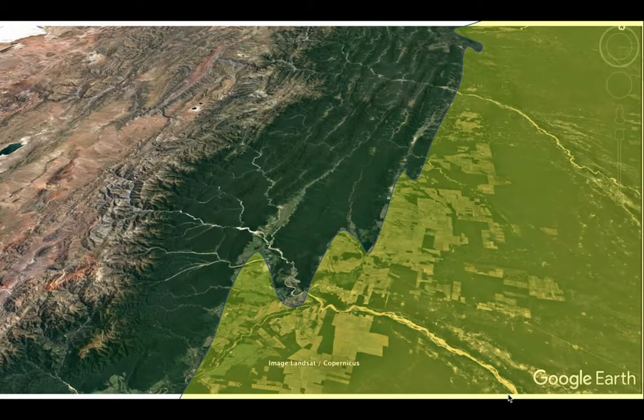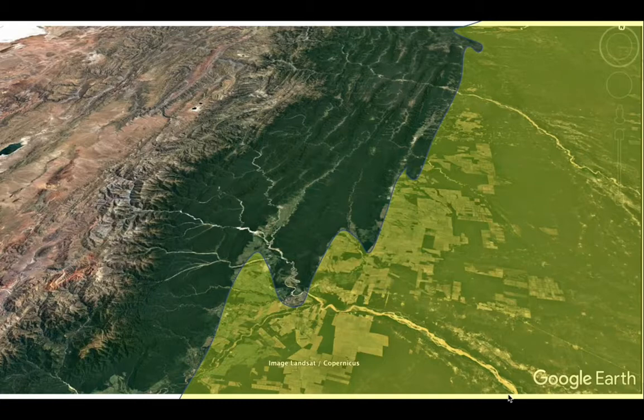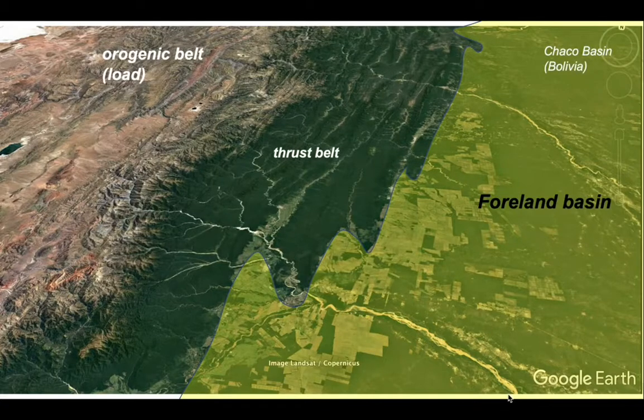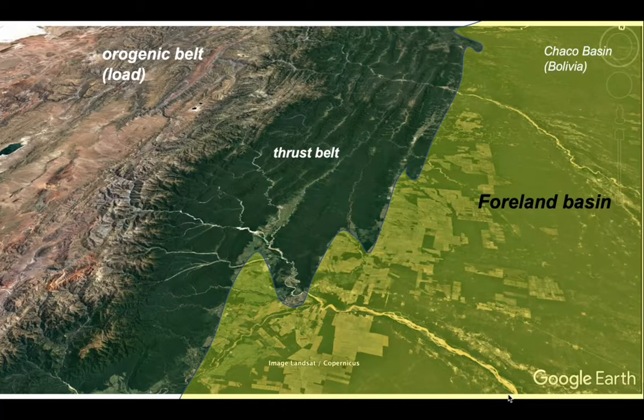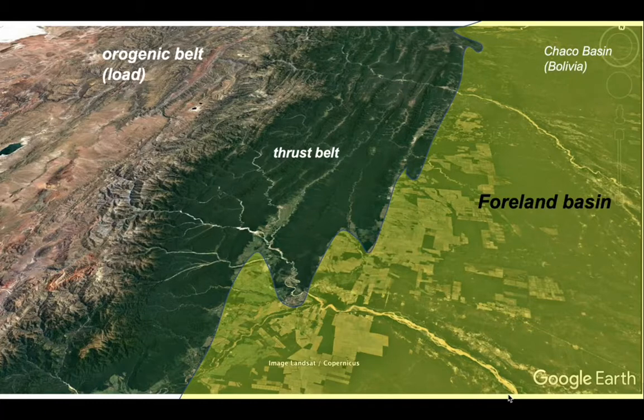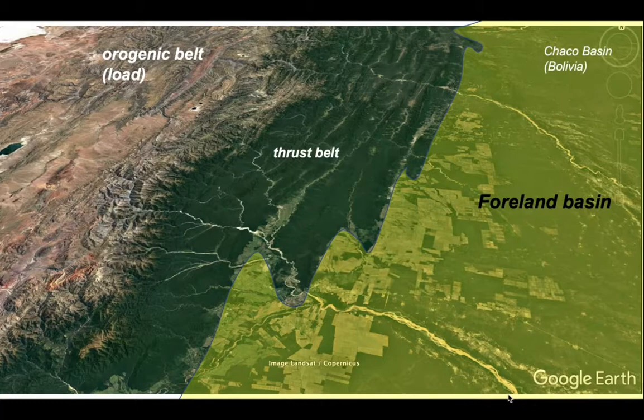And it's in this position here that sediment is accumulating that's been flushed off the Andean mountain chain. Well, let's add some geology. Let's first of all put on the extent of the Chaco basin as we see it today here. So these are areas where there's effectively active sedimentation. Let's put on the rest of the regional geology. So we've got orogenic belt, the Andes, over on the left hand side. And it's this that's acting as a load on the South American lithosphere.